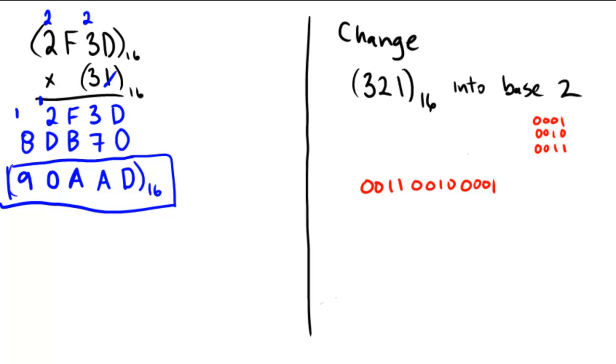So typically, as a final answer, I wouldn't write these zeros at the beginning, so I would write my final answer as 1-1-0-0-1-0-0-0-0-1 in a base 2 system.